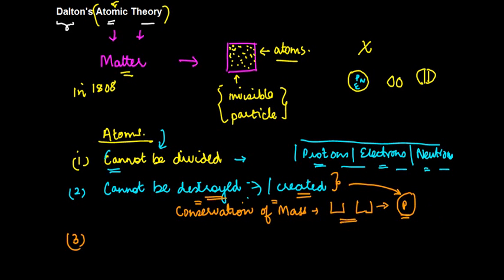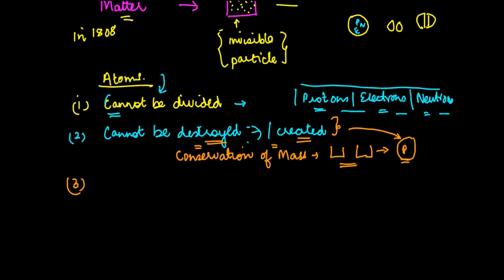The third property or third kind of conclusion which Dalton drew was that if you take atom of one particular thing, so let's say if you take an atom of oxygen—basically if you compare three or maybe whatever number of atoms may be of oxygen itself—these are going to be identical. So he said that atoms of one particular element are exactly the same or they are identical.